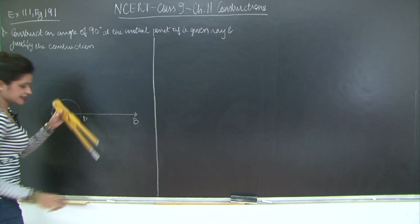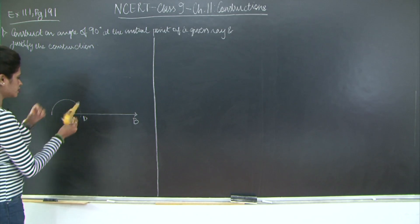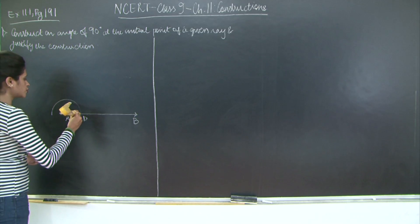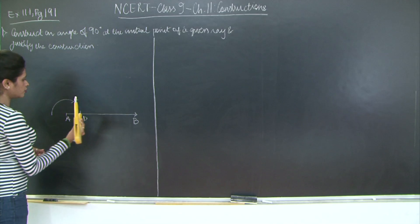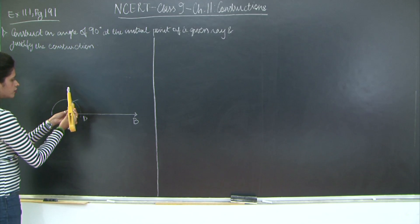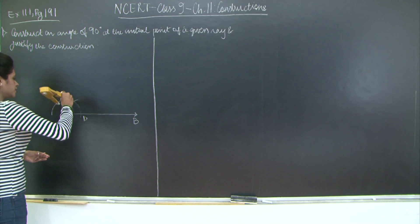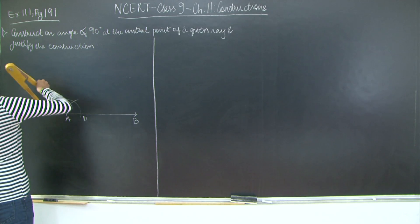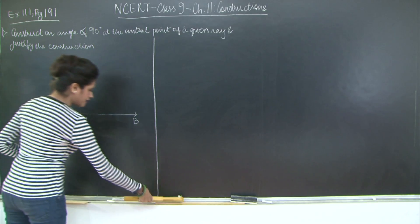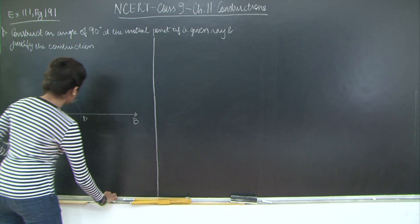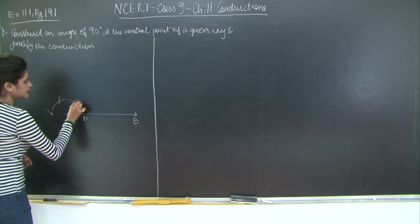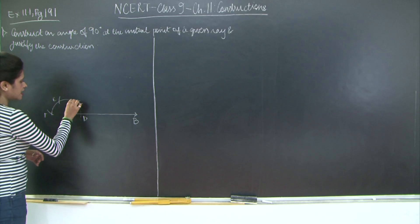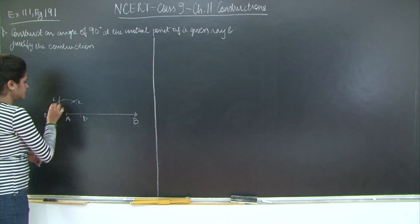Now without changing this length, I am going to take D as my centre and cut equal arcs — from D to this point, then from here, and then here. So I have three points: I will call them C, E, and F.